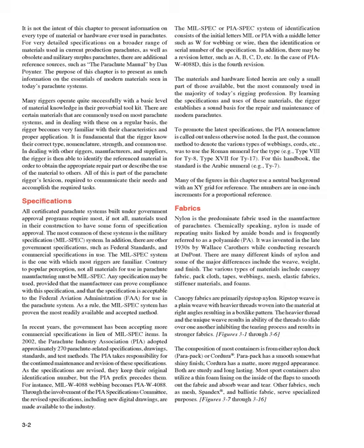Canopy fabrics are primarily ripstop nylon. Ripstop weave is a plain weave with heavier threads woven into the material at right angles, resulting in a box-like pattern. The heavier thread and the unique weave result in the ability of the threads to slide over one another, inhibiting the tearing process and resulting in stronger fabrics. The composition of most containers is from either nylon duck, Parapac, or Cordura. Parapac has a smooth, somewhat shiny finish; Cordura has a matte, more rugged appearance. Both are sturdy and long-lasting. Most sport containers also utilize a thin foam lining on the inside of the flaps to smooth out the fabric and absorb wear and tear. Other fabrics, such as mesh, spandex, and ballistic fabric, serve specialized purposes.